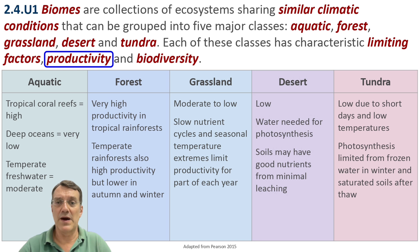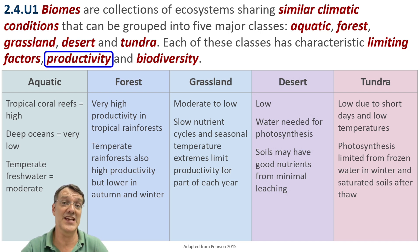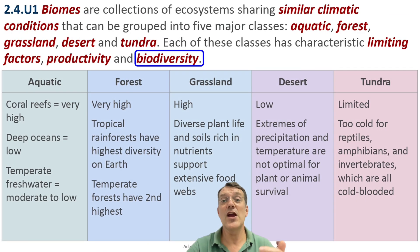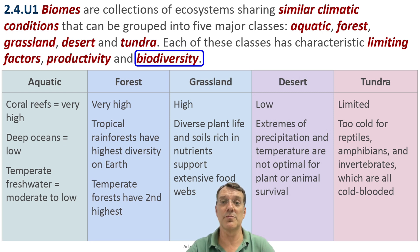Looking at productivity across biomes, we see significant differences. Tropical coral reefs and rainforests show very high productivity, while deep oceans and deserts have low productivity. Note how productivity relates to the availability of resources and energy for photosynthesis in each biome. Biodiversity also varies greatly — tropical rainforests have the highest biodiversity on Earth, with temperate forests coming in a close second. Desert and tundra biomes typically have lower biodiversity due to their harsh environmental conditions.